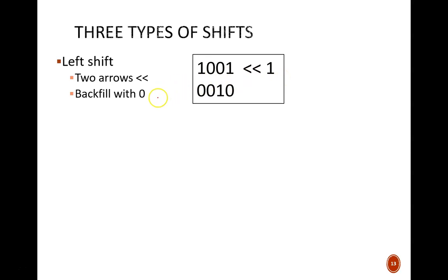Two left arrows followed by a 1 indicates that we should shift left by 1 bit. In a left shift, we always backfill with 0. As a result, the output code is 0010. Notice this rightmost 1 moves here, and the leftmost 1 falls into the bit bucket.